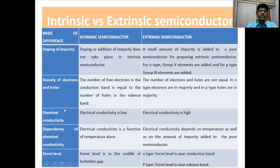The next difference is in terms of electrical conductivity. In intrinsic semiconductors, electrical conductivity is low. Whereas, in extrinsic semiconductors, electrical conductivity is high. In intrinsic semiconductors, electrical conductivity is a function of temperature alone. In extrinsic semiconductors, electrical conductivity depends on temperature as well as on the amount of impurity added to the pure semiconductor.